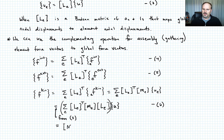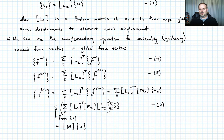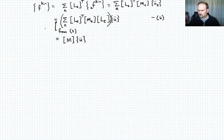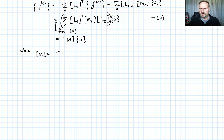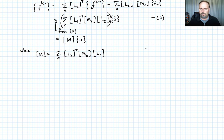We know this must equal M times U-double-dot. So we define M, the global mass matrix, as equal to the sum over all elements of the quantity L_E transpose times M_E times L_E. Call this equation 7.